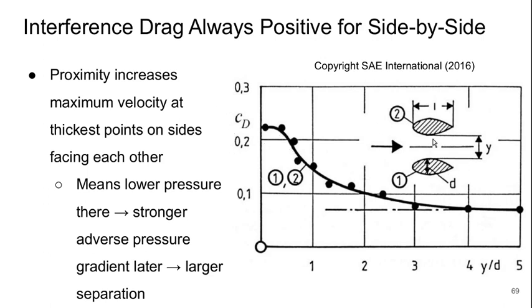And the reason is that this proximity of the two objects to one another increases the maximum velocity at the thickest points on the sides facing each other, so in here. That means there's a lower pressure there and therefore a stronger adverse pressure gradient on the back half. And that means that the separation regions will be larger.